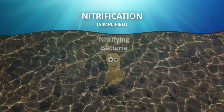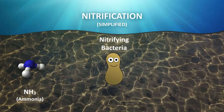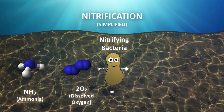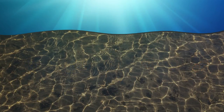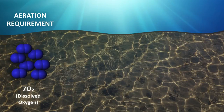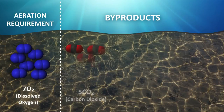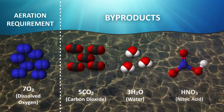Nitrification is accomplished through nitrifying bacteria. In this step, nitrifying bacteria oxidizes ammonia with 2 additional moles of oxygen, reducing it to water, 2 moles of acidity represented by the hydrogen atom, and nitrates. Combining the biomass destruction with the nitrification reaction, the biomass requires a total of 7 moles of oxygen for both processes to occur. The byproducts of the combined reactions are 5 moles of carbon dioxide, 3 moles of water, and 1 mole of nitric acid.